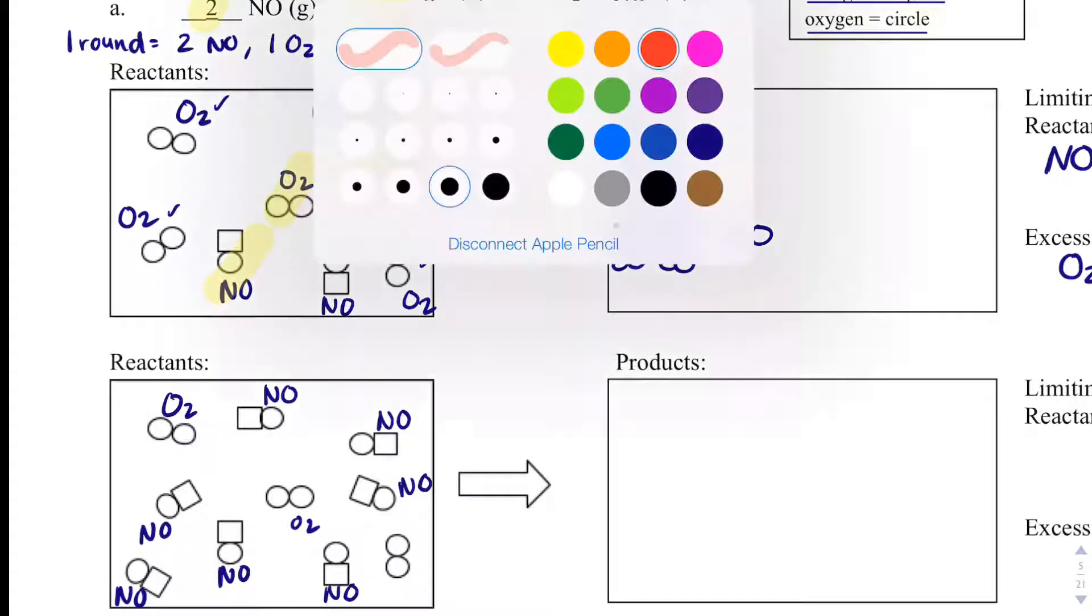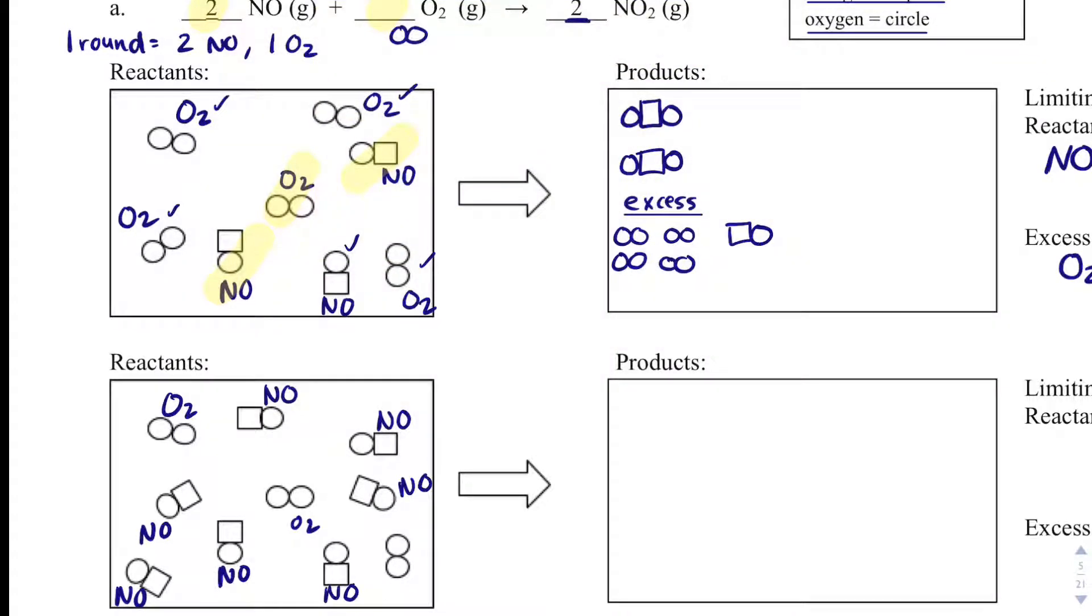We're going to go round by round and see how many rounds we can get through. So two NOs for every one O2. And that's going to give us two NO2s. So I'm going to draw those. That's one round. Let's try to do another round. NO, NO, and then oxygen. I forgot to label that oxygen down there. And so I'm going to be able to get two more NOs or NO2s.